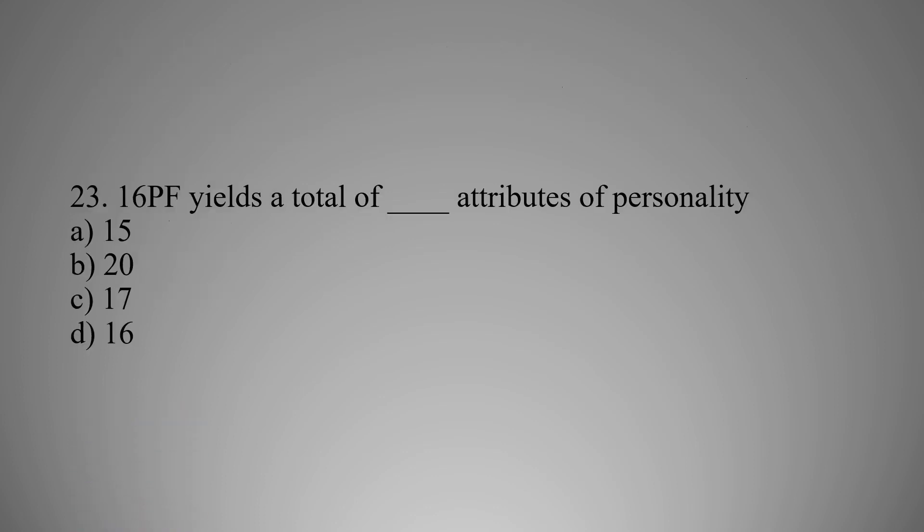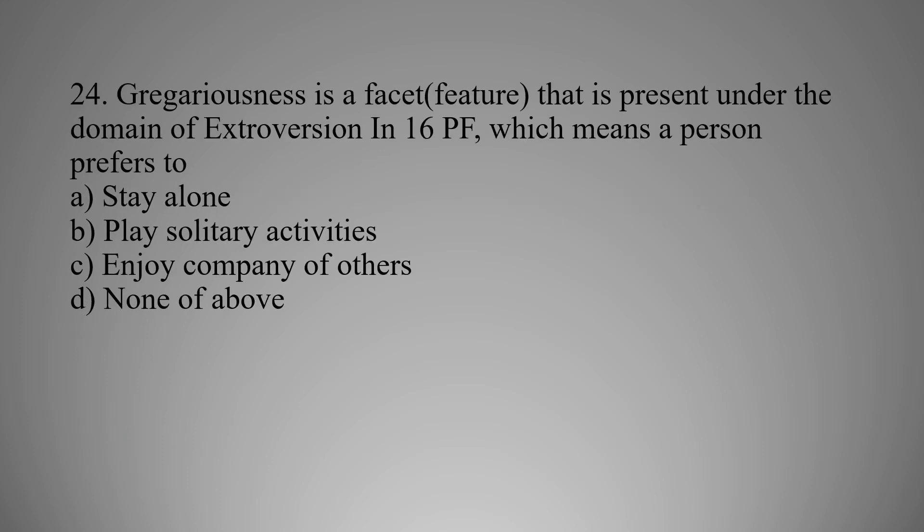MCQ number twenty-three: The 16PF yields a total of how many attributes of personality? Option A: 15, Option B: 20, Option C: 17, Option D: 16. The right option is B — 20.